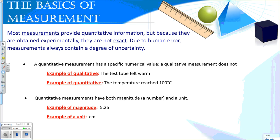So the basics of measurement. Most measurements are going to be quantitative and they're going to have a degree of uncertainty because of human error. We need to compare and contrast quantitative versus qualitative measurements. An example of qualitative is the test tube felt warm. An example of quantitative is the temperature reached 100 degrees Celsius.